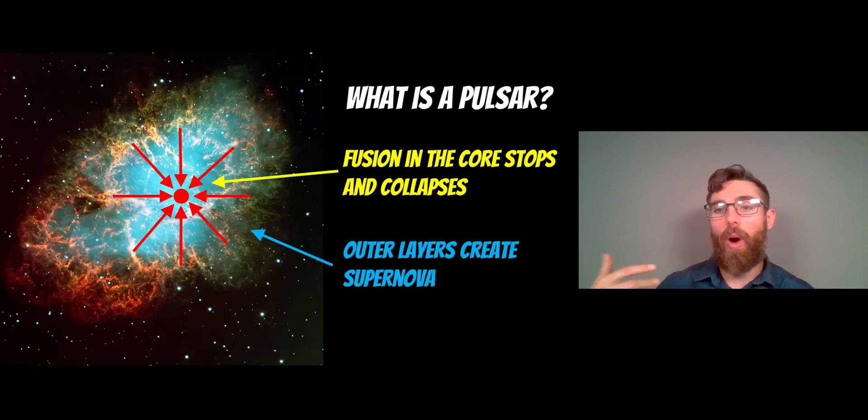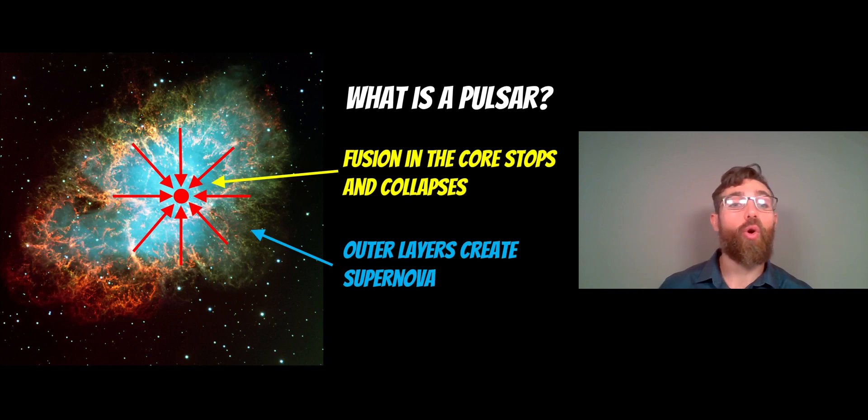When fusion in the core stops, that core then collapses. Depending on the type of star that it is, it rebounds and the outer layers contribute to a supernova.